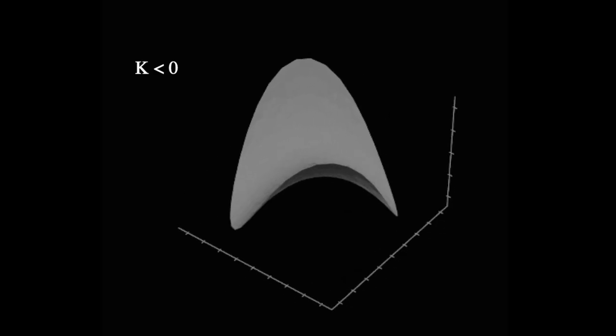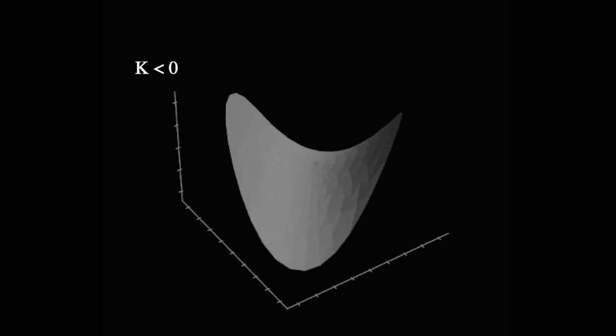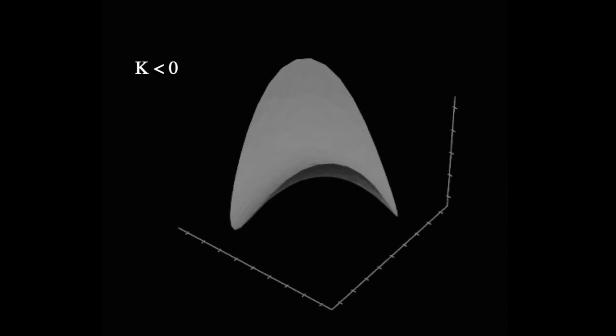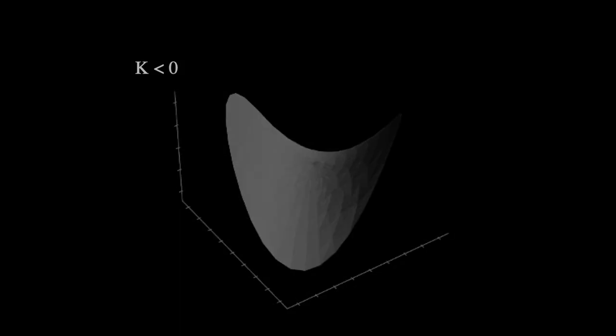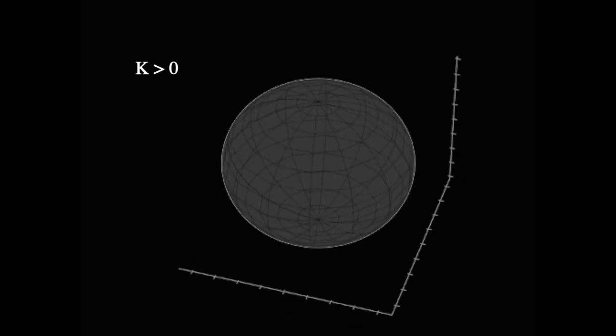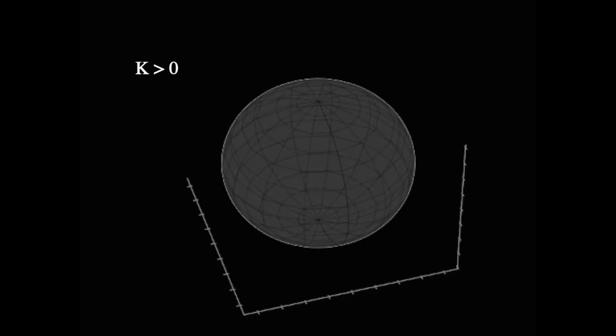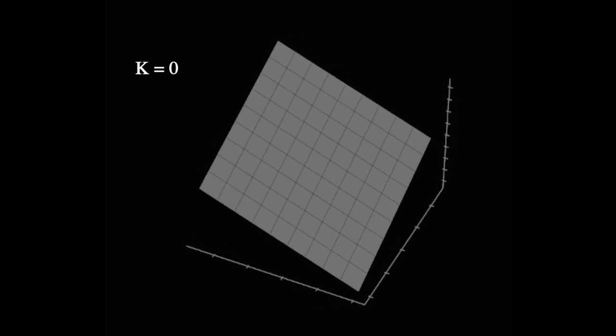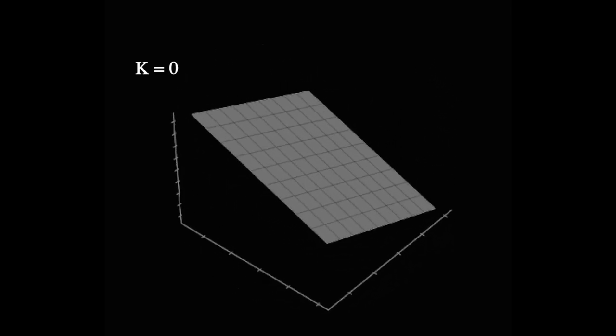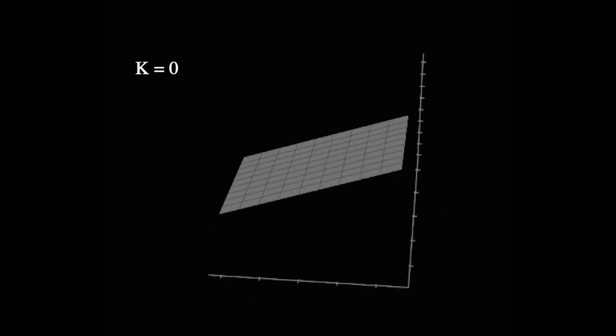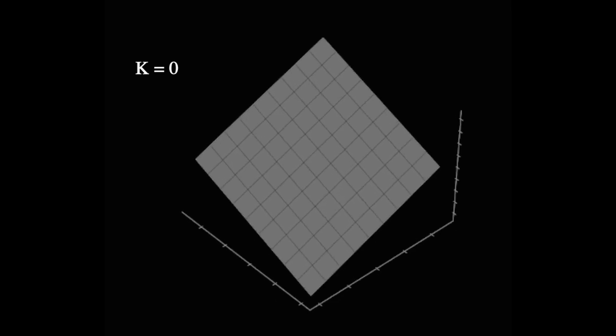If k is negative, we say that the universe is open. The surface of the saddle shape is a geometry that has this curvature. So if you were a two-dimensional being living in a two-dimensional open universe, it might look something like this. If k is positive, we say that the universe is closed. And a two-dimensional example of this type of geometry is the surface of this sphere. And if k is equal to zero, we say that the universe is flat or critical. And a two-dimensional example of this geometry is a sheet. Keep this one in mind, because it'll be important later.